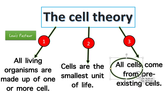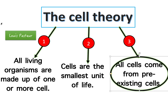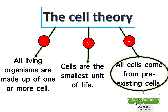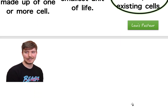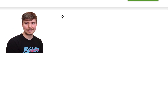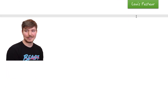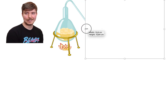All cells come from pre-existing cells — how can we prove this? How did scientists prove this to be true? There's a guy called Louis Pasteur, and he is the one who actually proved this to be true. Today we're going to find out how he did this. Louis Pasteur is our main focus, and let's look at how he proved that all cells come from pre-existing cells.